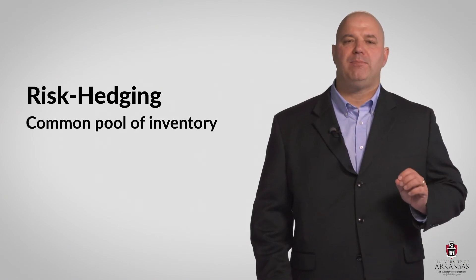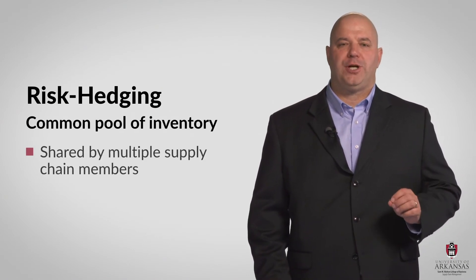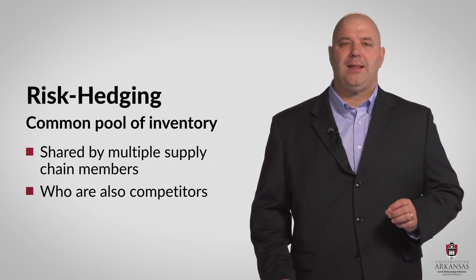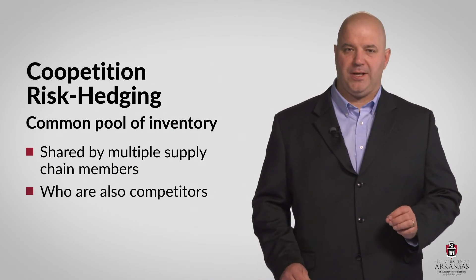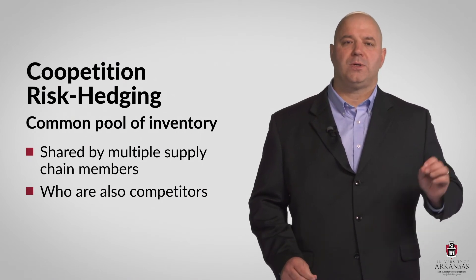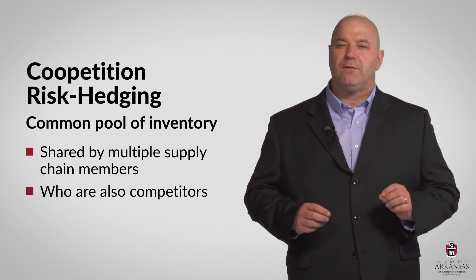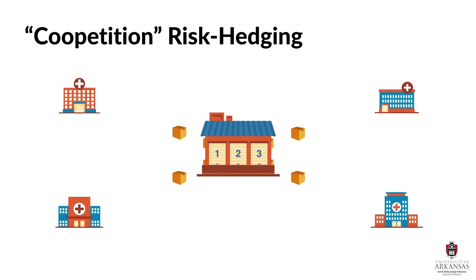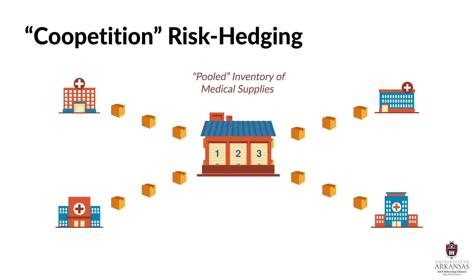Another form of risk hedging supply chain strategy deals with a common pool of inventory that is shared by multiple supply chain members who are also competitors. I like to call this coopetition risk hedging because it requires cooperation between competitors. For example, in some large cities, competing hospitals all use a shared distribution facility and a common pool of inventory to minimize the risk of supply disruptions. This approach takes advantage of the statistical concept of aggregation.